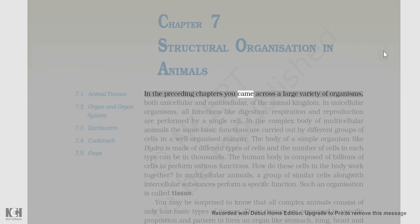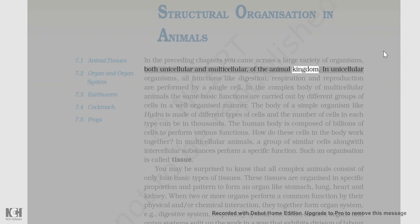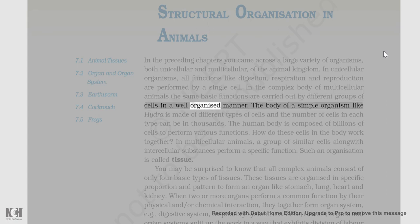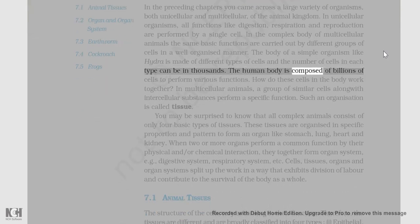In the preceding chapters you came across a large variety of organisms, both unicellular and multicellular, of the animal kingdom. In unicellular organisms, all functions like digestion, respiration, and reproduction are performed by a single cell. In the complex body of multicellular animals, the same basic functions are carried out by different groups of cells in a well-organized manner. The body of a simple organism like Hydra is made of different types of cells, and the number of cells in each type can be in thousands. The human body is composed of billions of cells to perform various functions.